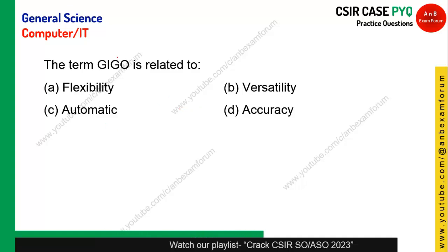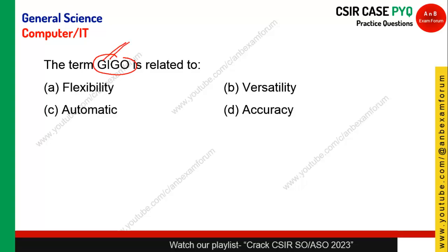What does the term GIGO relate to? GIGO stands for Garbage In, Garbage Out. If you feed wrong input into your PC, it will give wrong output; if you feed correct input, it will give correct output. It is essentially about accuracy. If you give accurate input, it generates accurate results. Option D is the correct answer.